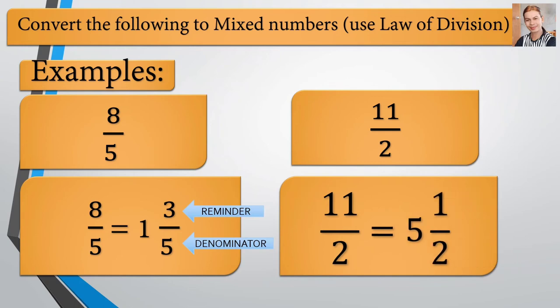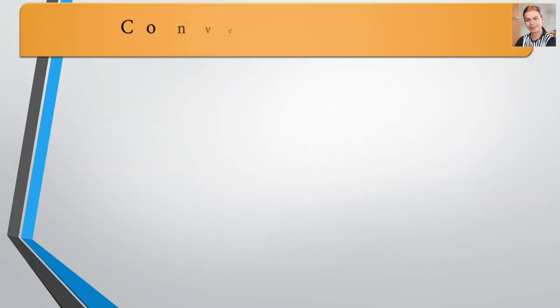Our next example is 11 over 2. The solution for 11 over 2, if we convert that into mixed fraction, that would be 5 and 1 half. Of course, same process that is remainder and denominator.